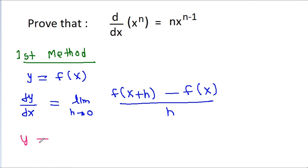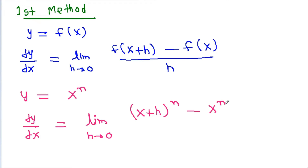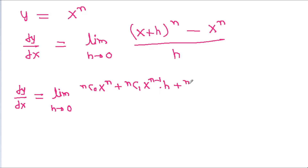For y equal to x to the power n, we get dy by dx equal to the limit as h tends to 0 of (x plus h) to the power n minus x to the power n, all divided by h. Now, according to the binomial expansion, (x plus h) to the power n equals nC0 x to the power n plus nC1 x to the power n minus 1 times h plus nC2 x to the power n minus 2 times h squared, and so on up to nCn times h to the power n, minus x to the power n.